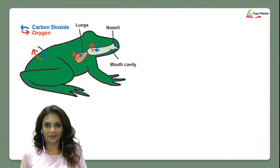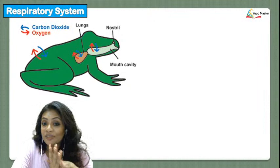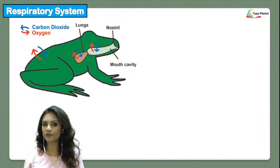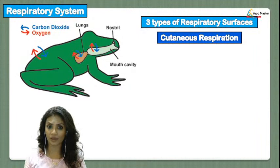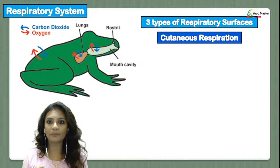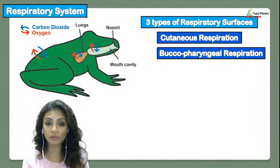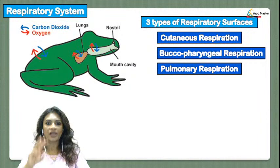Moving on to the respiratory system: since the frog lives both on land and in water, it has different types of breathing. There are three types of respiratory surfaces used by the frog. First, breathing through the skin — called cutaneous respiration. Second, respiration through the mouth — called buccopharyngeal respiration. Third, respiration through the lungs — called pulmonary respiration. The three respiratory surfaces are the skin, the pharynx, and the lungs.